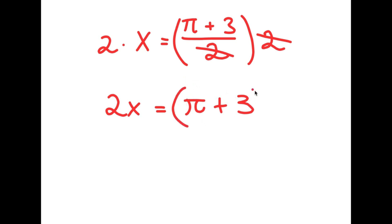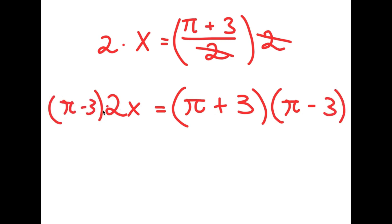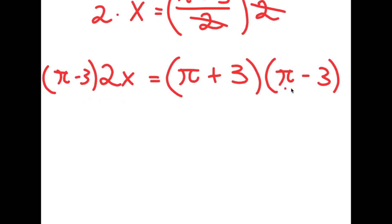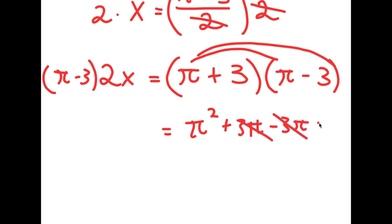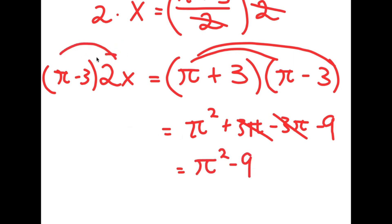And now from here, I'm going to multiply both sides by pi minus 3. So I have pi minus 3 times 2x is equal to pi plus 3 times pi minus 3. Now pi plus 3 times pi minus 3 — I'm going to distribute: pi squared plus 3pi minus 3pi, which cancel out, minus 9. So this is pi squared minus 9. And for my left-hand side, distributing the 2x gives me 2x·pi minus 6x.